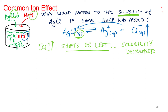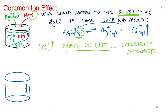Sometimes the common ion isn't as easy to spot. Let's stick with our silver chloride. We throw some silver chloride into our beaker — most of it sits at the bottom as solid, and we've got some silver ions and chloride ions in solution.